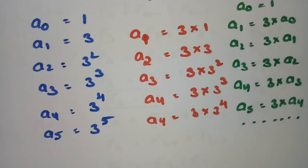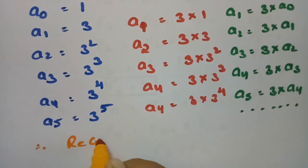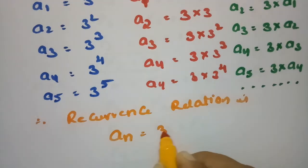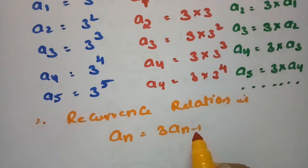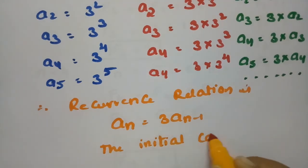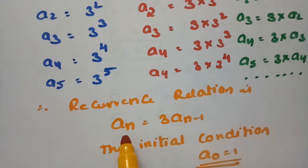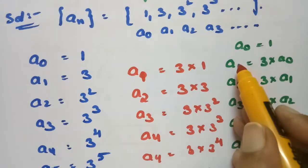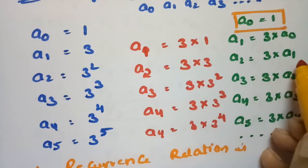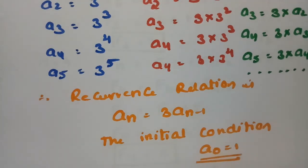Therefore the recurrence relation is Aₙ = 3 × Aₙ₋₁, with the initial condition A0 = 1. This is how we frame each term in relation to the previous term. This is the recurrence relation and A0 = 1 is the initial condition.